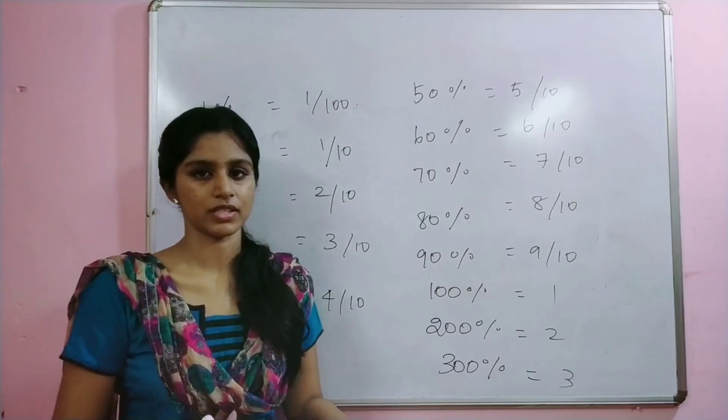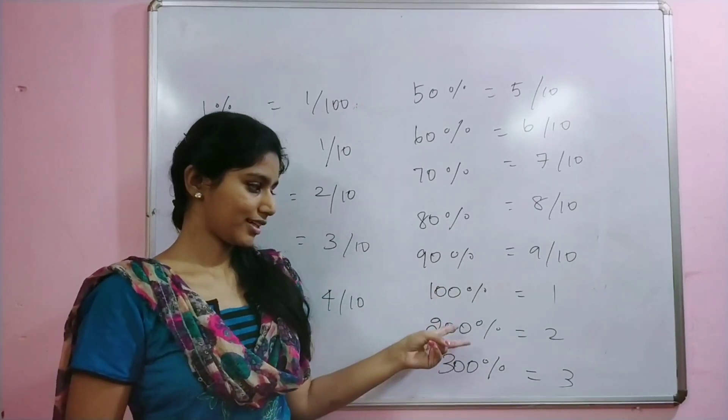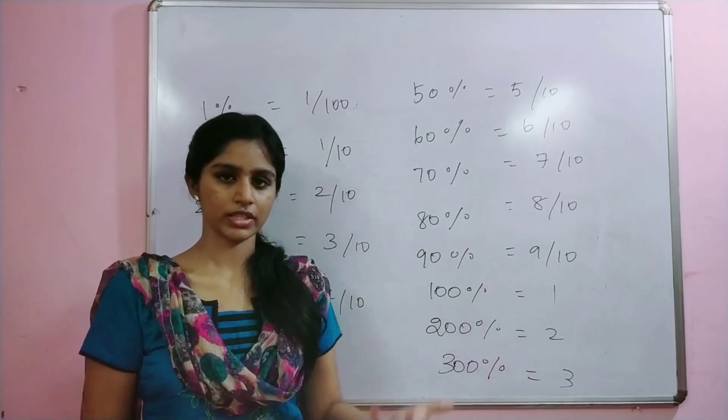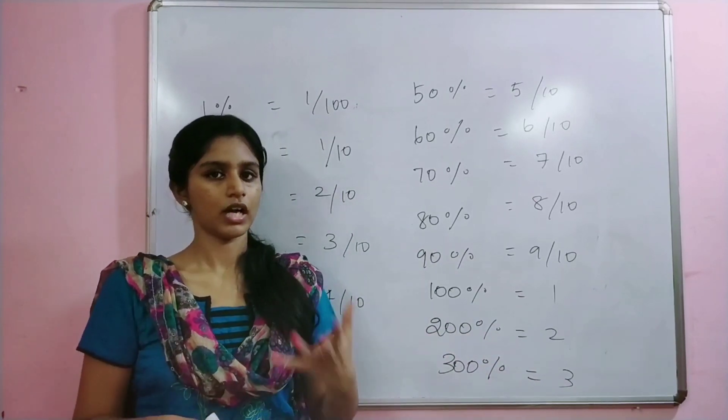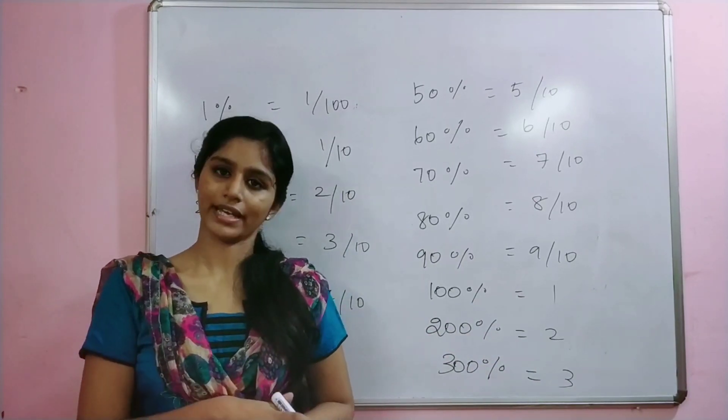For example, 100 percentage value is 1. 200 percentage value is 2. 300 percentage is 3. 900 percent, the fraction value is 9.